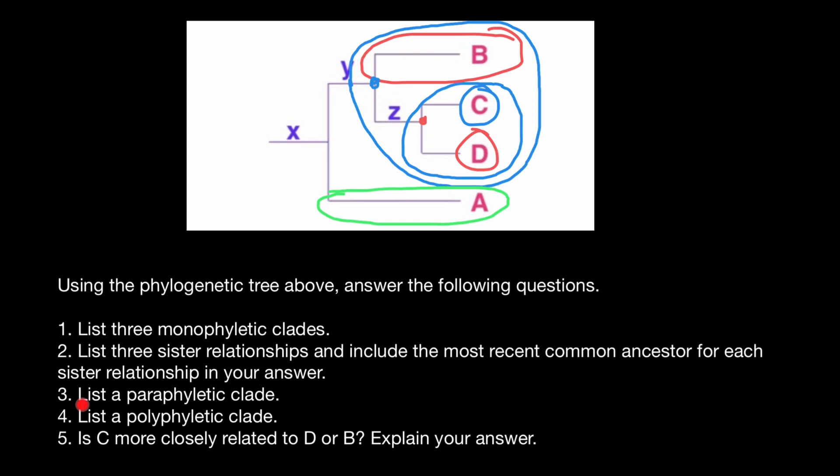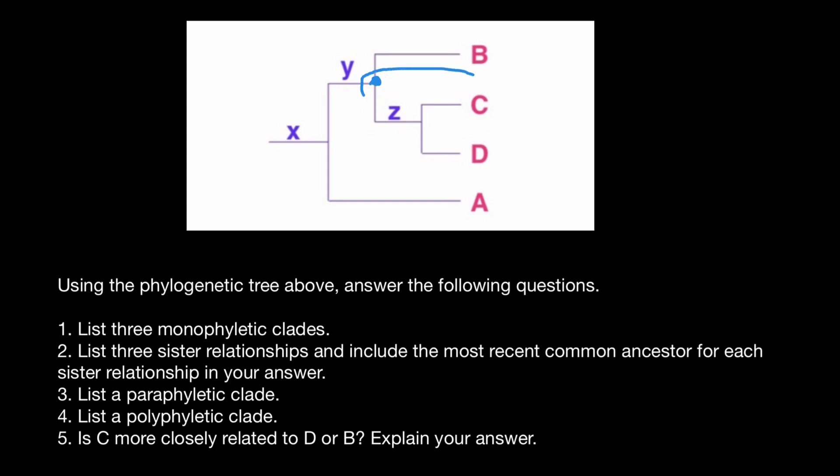And next, list a paraphyletic clade. Imagine that we took this recent common ancestor, and instead of circling all the descendants B, C, and D, we only circle descendants C and D. This is going to be an example of a paraphyletic group.